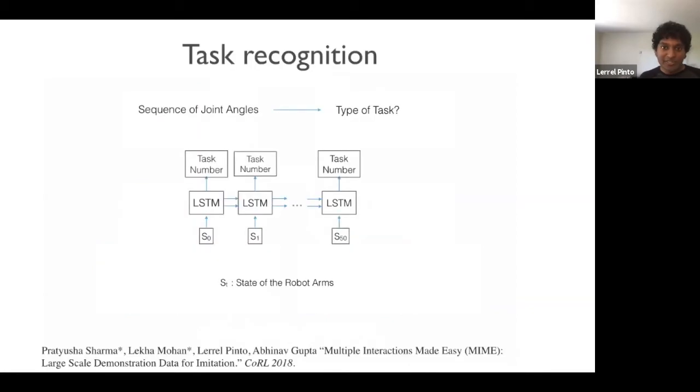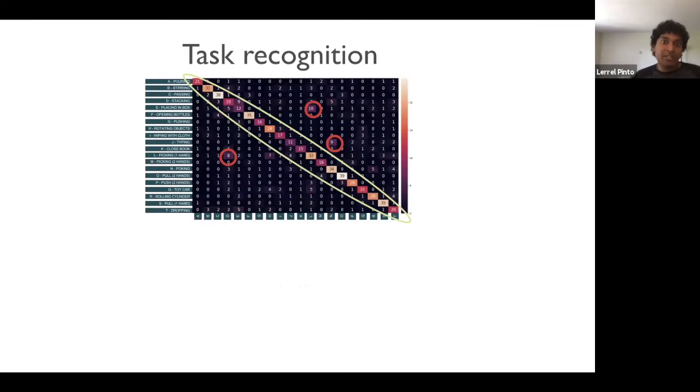So now we have this large-scale dataset called MIME. So what can we actually do with MIME? The first thing we do is task recognition, where given an input sequence of joint angles, we want our model to output what type of task is being solved. So to do this, we have a simple LSTM-based network which takes as input a trajectory and outputs the task. So since we have 20 tasks, it's sort of like a 20-class learning problem. And now when we train this model using all of our MIME data, what we see is that this model is able to learn really well. We get around 60% accuracy on this task, where random is around 5%. But what is more interesting is that the failure modes actually make sense. So for instance, it often gets confused between stacking and picking. And this is because when you have to stack one object on top of another object, you often need to pick one object.